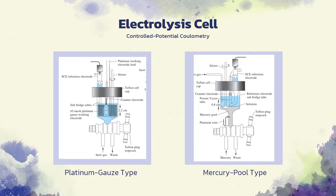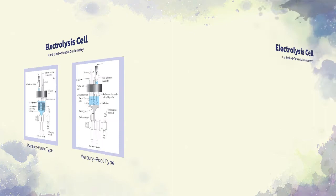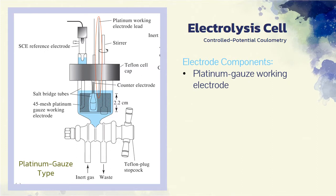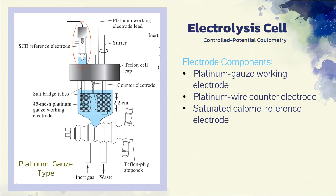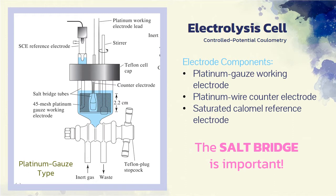These figures illustrate two types of cells that are used for potentiostatic coulometry. The first figure consists of a platinum gauze working electrode, a platinum wire counter electrode, and a saturated calomel reference electrode. The counter electrode is separated from the analyte solution by a salt bridge that usually contains the same electrolyte as the solution being analyzed. The salt bridge is needed to prevent the reaction products formed at the counter electrode from diffusing into the analyte solution and interfering.